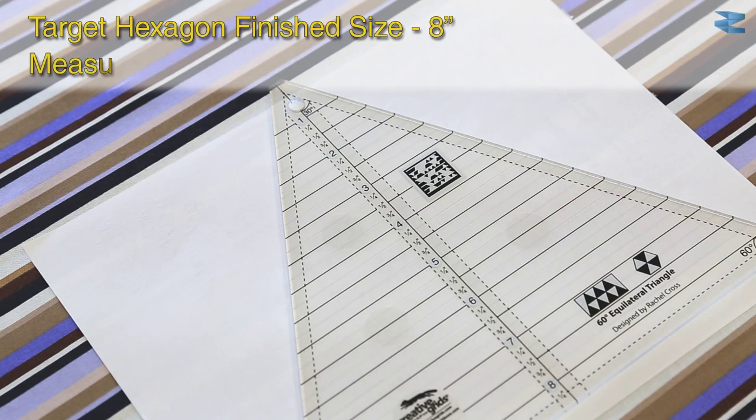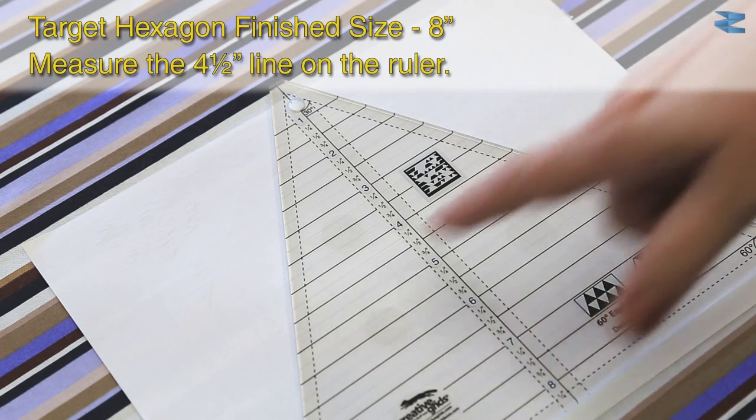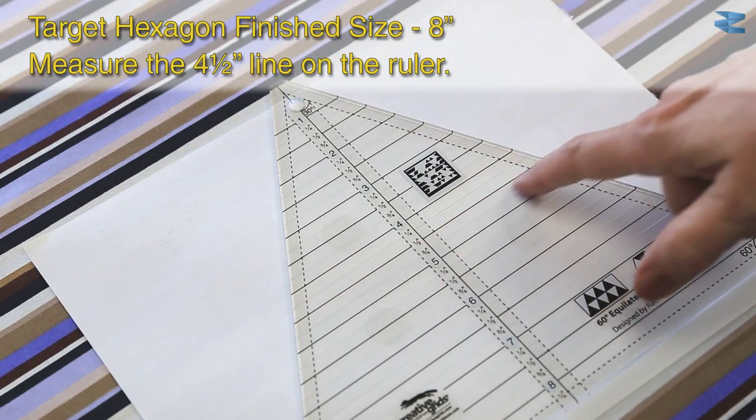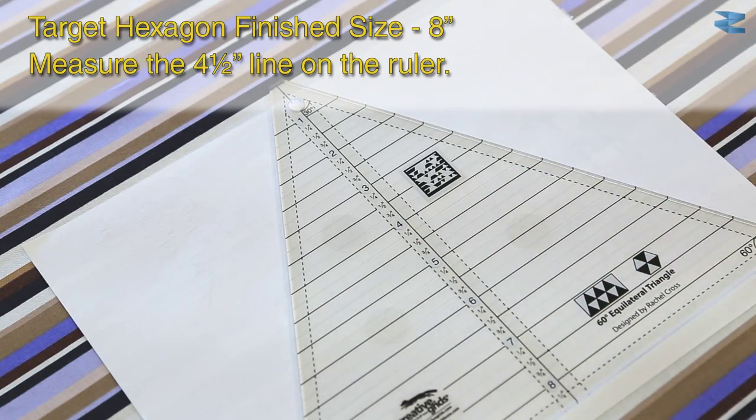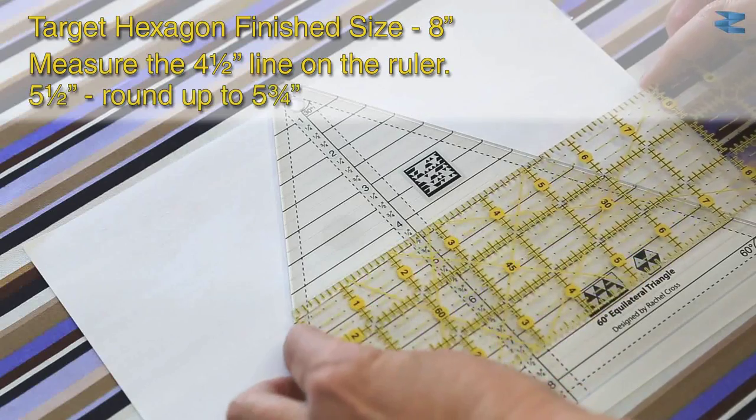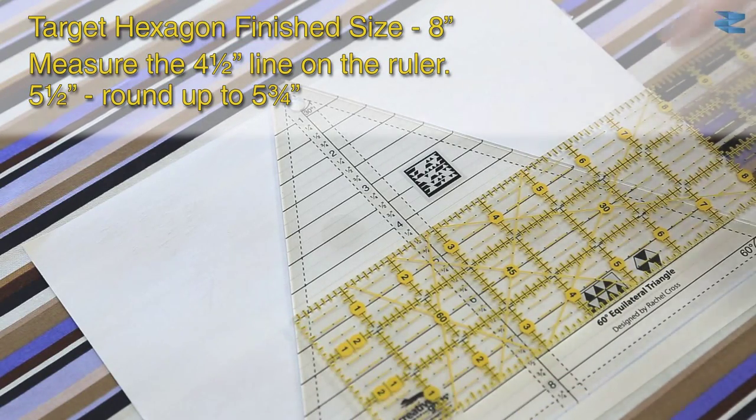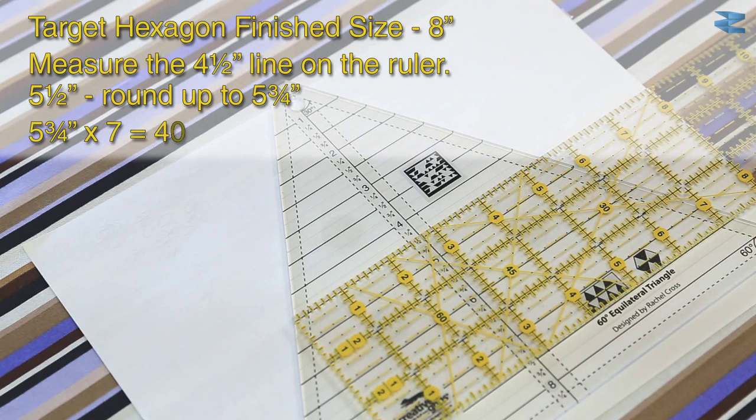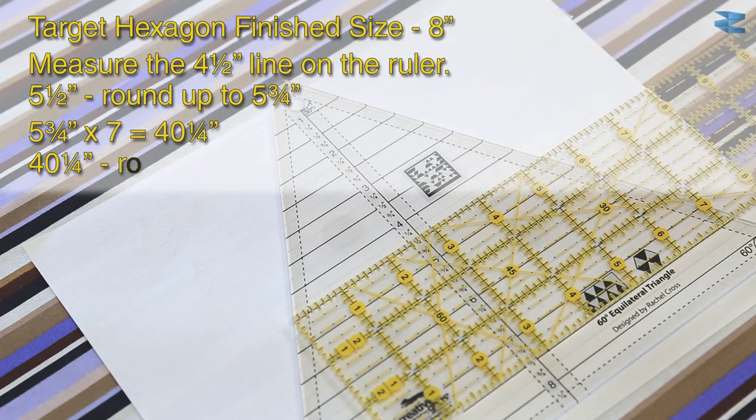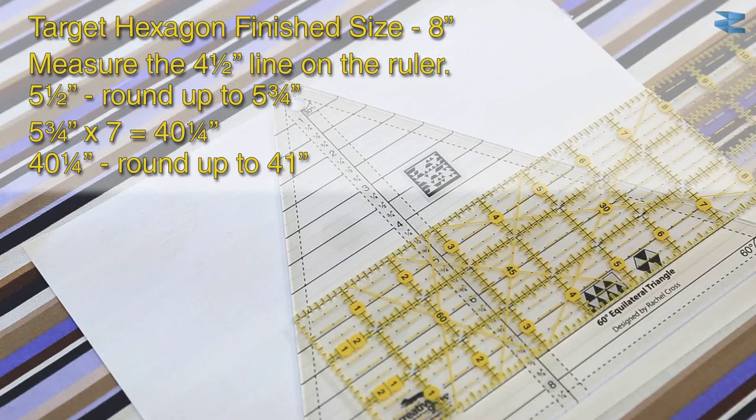For an eight inch finished hexagon, I measured the four and a half inch line on the ruler and that came to just a little bit over five and a half inches. So I rounded that up to five and three quarters, multiplied that by seven and that came to forty and a quarter inches. Then I rounded that number up and cut the fabric at forty one inches.